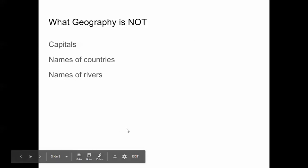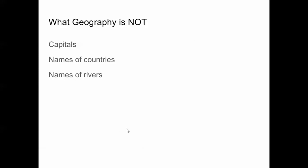What we need to understand is that geography is not these things. Geography is not the study of capitals, or the study of the names of countries, or memorizing rivers. Geography is not simply about memorizing where things are on a map. If we really want to study the names of places, there is a sub-discipline called toponymy, which is the study of where and why things are named the way they are.